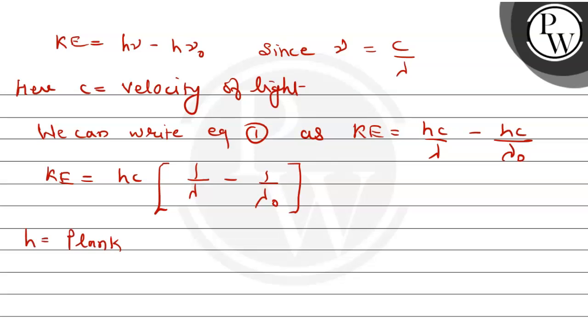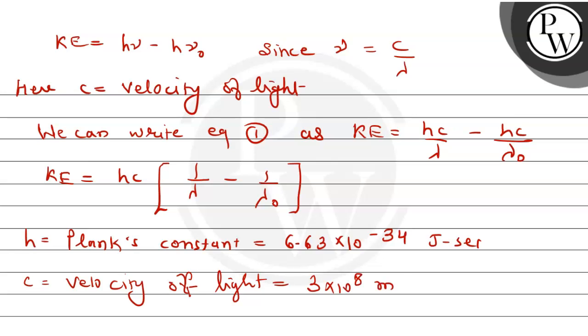Students, h is Planck's constant. Its value is 6.63 into 10 to the power minus 34 joule second. And c, this is velocity of light.